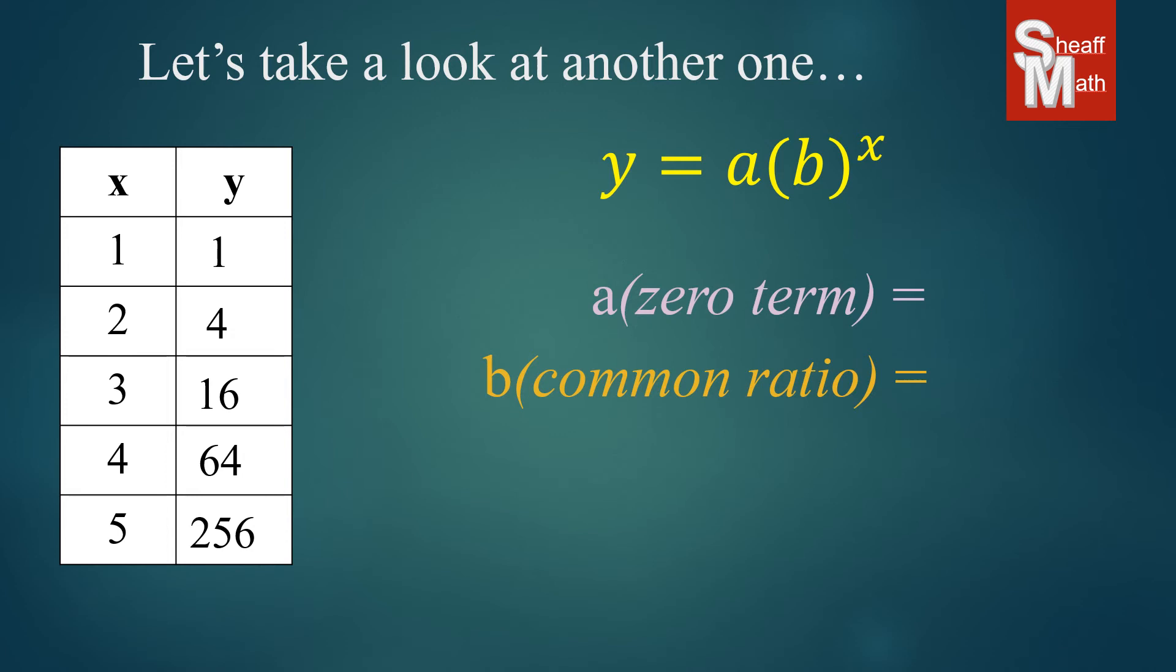So we start dividing our numbers. 4 divided by 1 equals 4. 16 divided by 4 is 4, and so on. So we found that one.